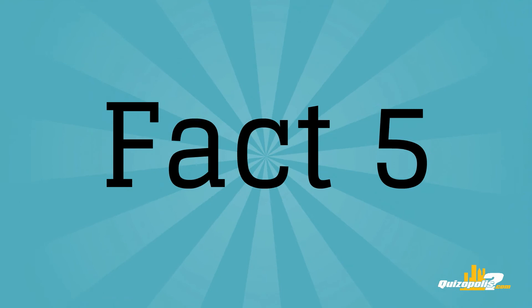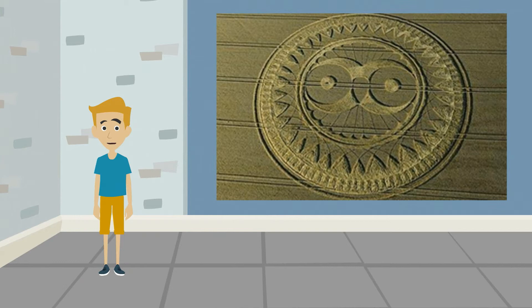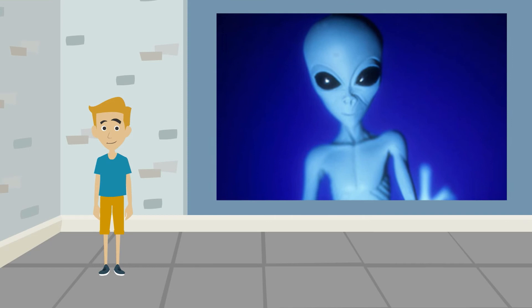And finally, fact number 5. In 2009, a mysterious crop circle appeared overnight in Wilkeshire, England that has a striking resemblance to Hedwig. No one knows how the crop circle got there, but it's good to know that even our alien friends enjoy Harry Potter.